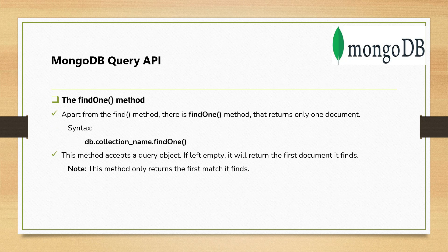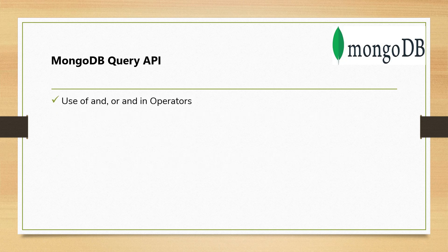The second method is findOne. Apart from find, there is also a findOne method that returns only one document. It also accepts a criteria. If you do not specify any criteria and leave the parenthesis empty, it will return the very first matching document within the collection.